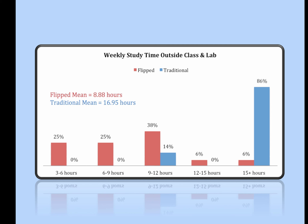The traditional students were spending twice as much time studying as the flipped students, and yet they were scoring lower on the midterm and much lower on the final exam, and their overall learning as measured by the standardized pre- and post-test was only half as much.